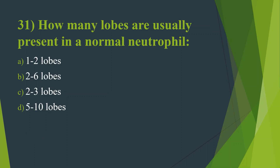Thirty-first question: How many lobes are usually present in a normal neutrophil? Option A, 1 to 2 lobes. Option B, 2 to 6 lobes. Option C, 2 to 3 lobes. Option D, 5 to 10 lobes. Answer is Option B, 2 to 6 lobes.